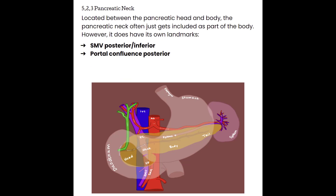Moving to the neck — the neck is located between the pancreatic head and body, and oftentimes the pancreatic neck is just going to be included as part of the body, but it does have its own landmarks. The neck is just a very small sliver of pancreas. The superior mesenteric vein is going to run posterior and inferior to it, and the portal confluence is also posterior to the neck.